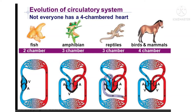Moving through evolution: in phylum Platyhelminthes, most of the body is occupied by the digestive and excretory system. In Nemathelminthes, there is a pseudocoelum which has taken up the function of collection and distribution of materials. In Annelids — the first eucoelomates — a pulsatile vessel is developed to move the fluid, and the transporting medium is blood.